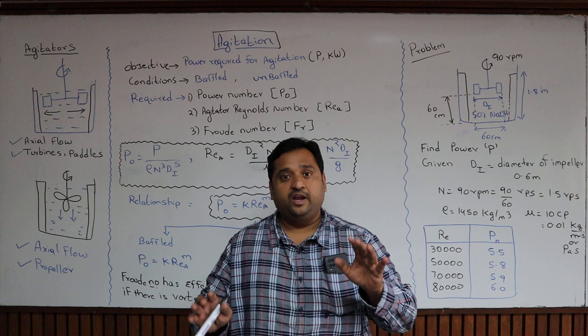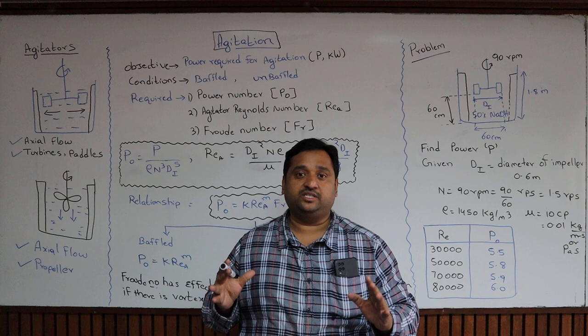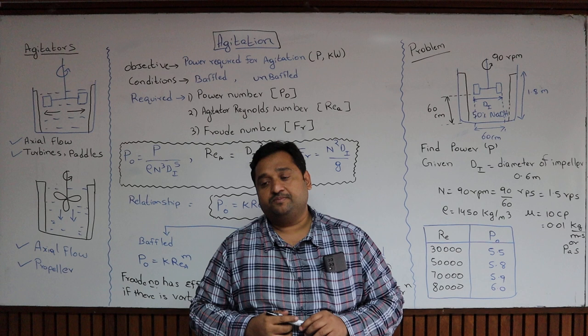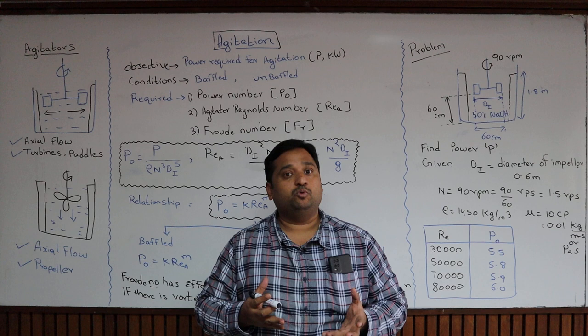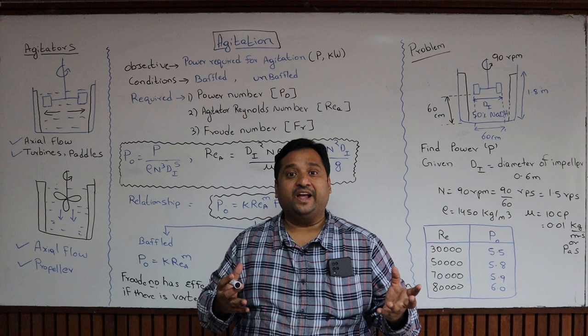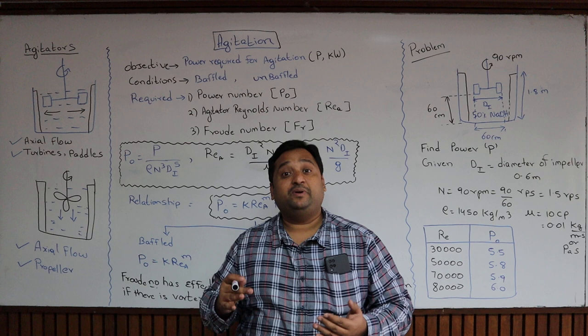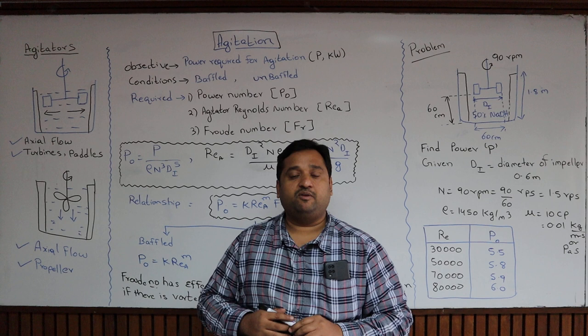Welcome to this lecture on mechanical unit operations. Today we are going to discuss the power requirements for an agitator in kilowatts or horsepower. Agitation is one of the important unit operations in the chemical industries — used to mix two substances, two liquids, semi-solids, or to keep anything in suspension mode. For different capacity systems there are different power requirements for agitators.